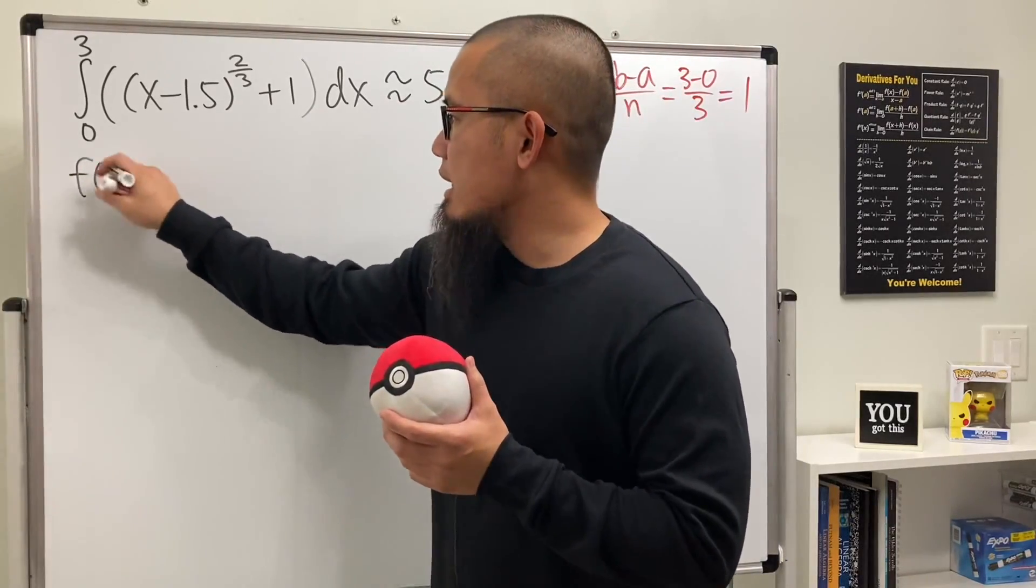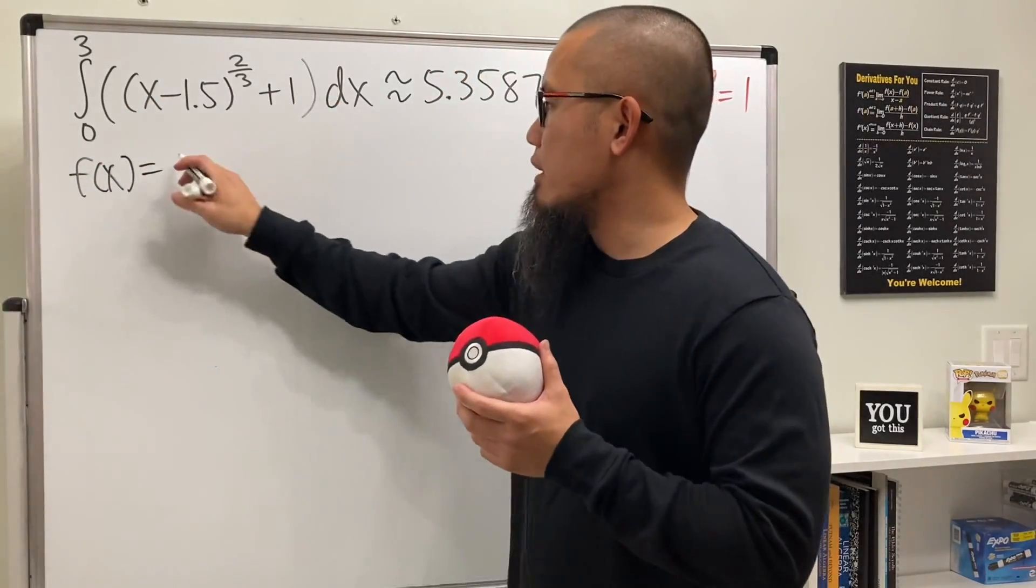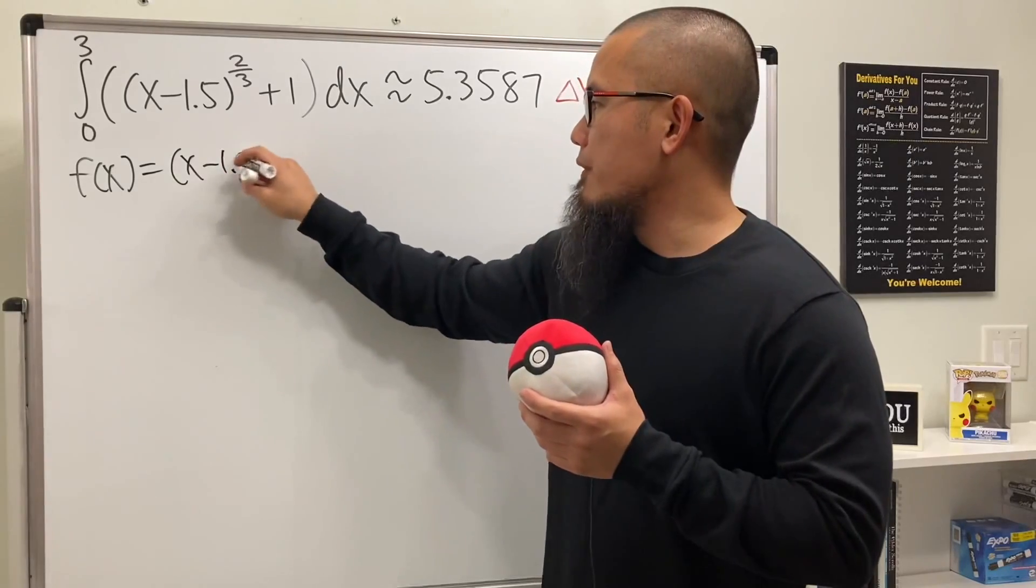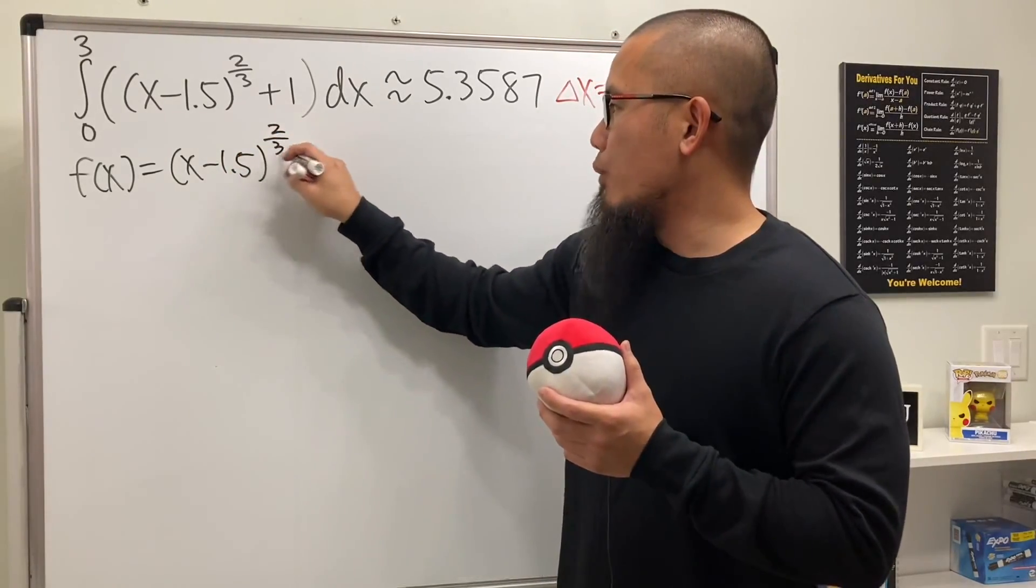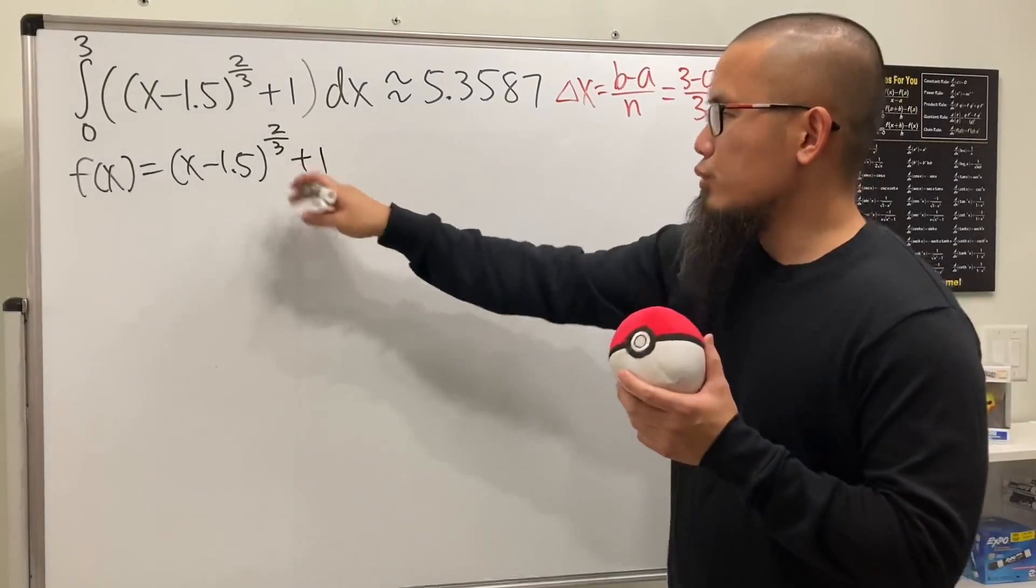Let me indicate that f(x) is equal to (x - 1.5) raised to the 2/3 power plus 1. You don't really have to draw this function.